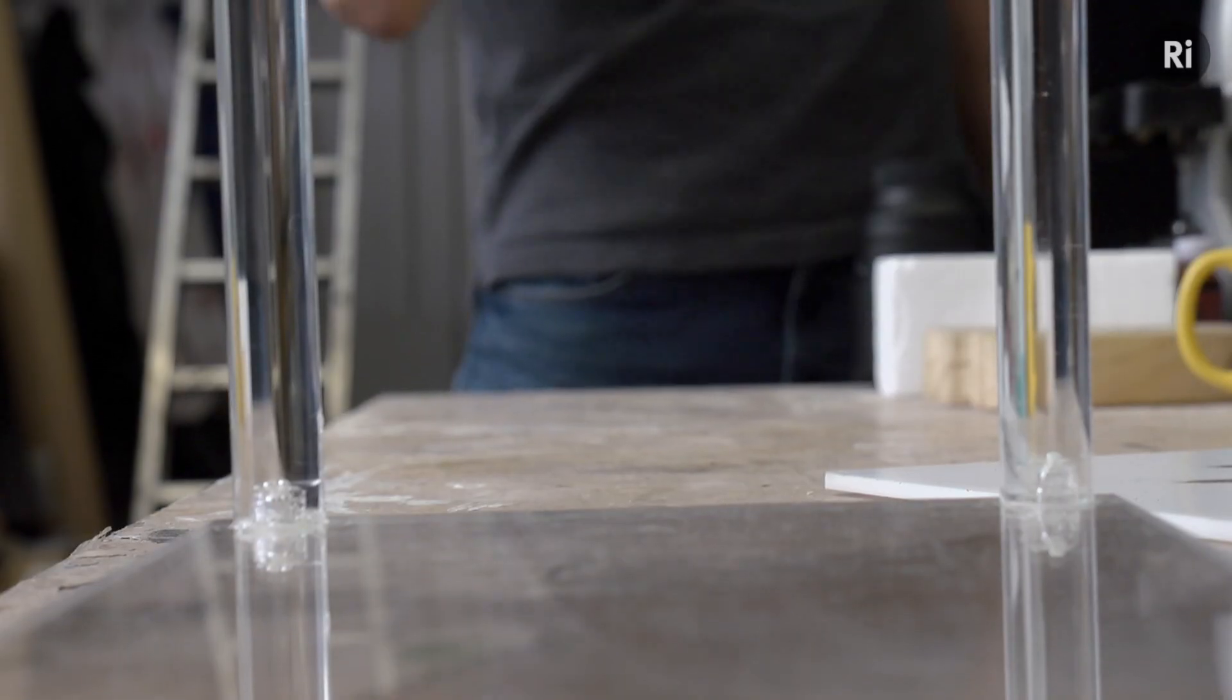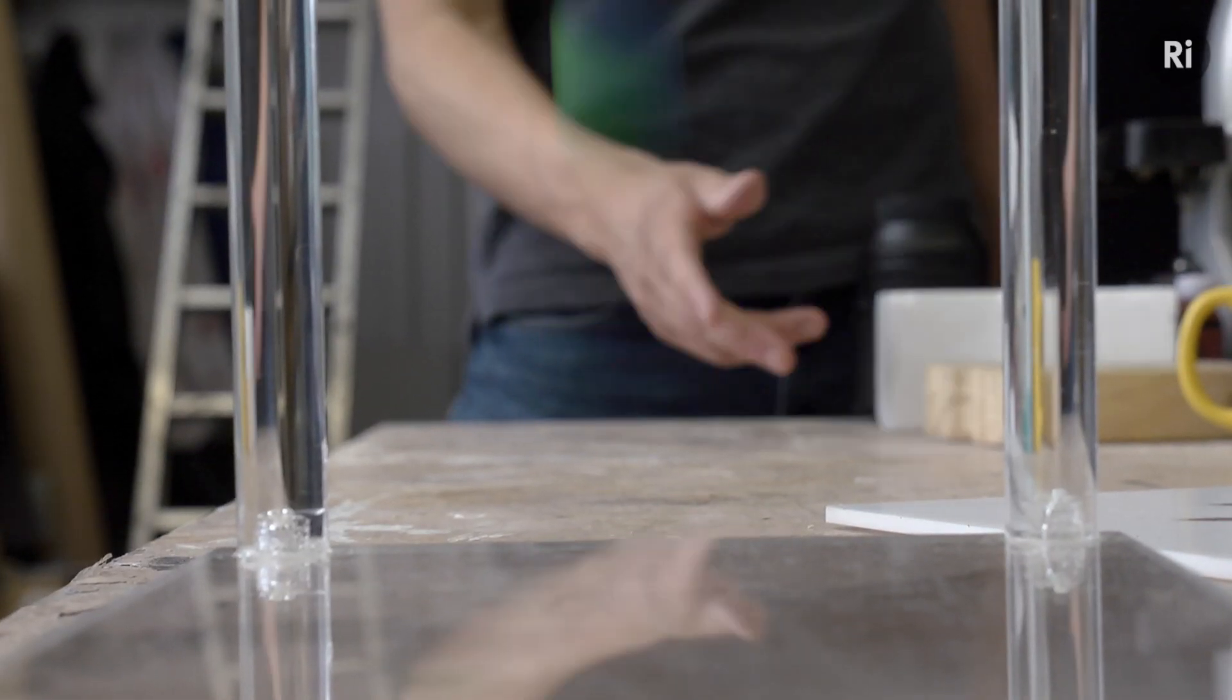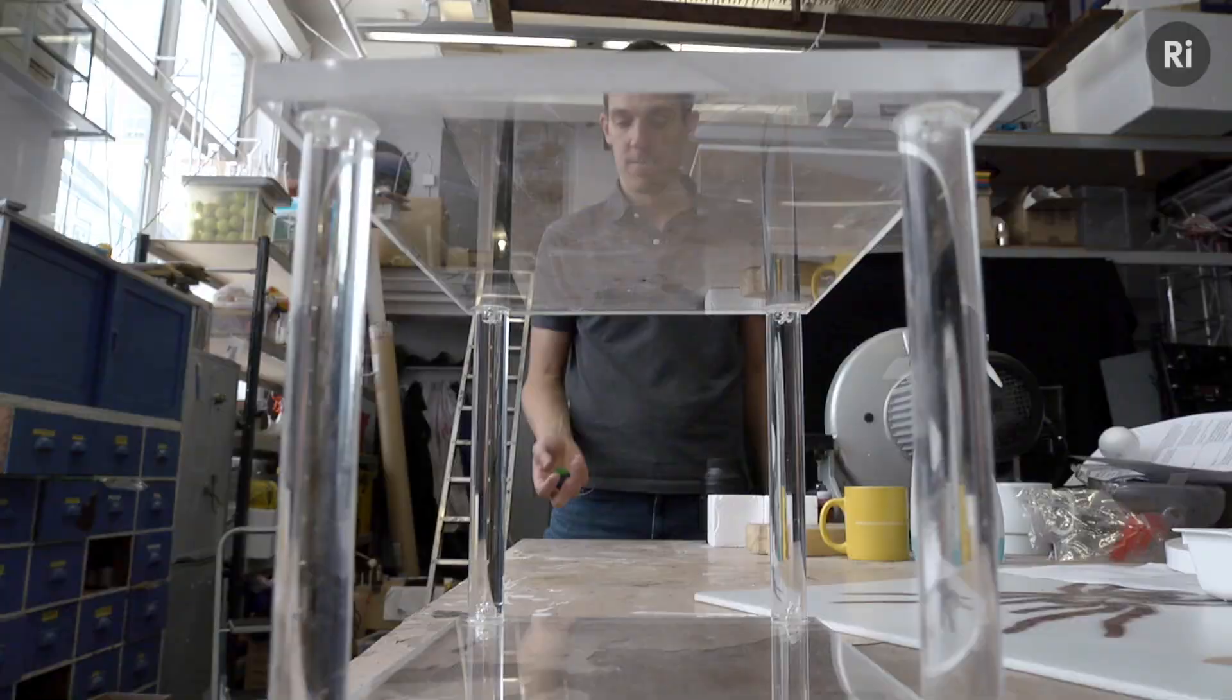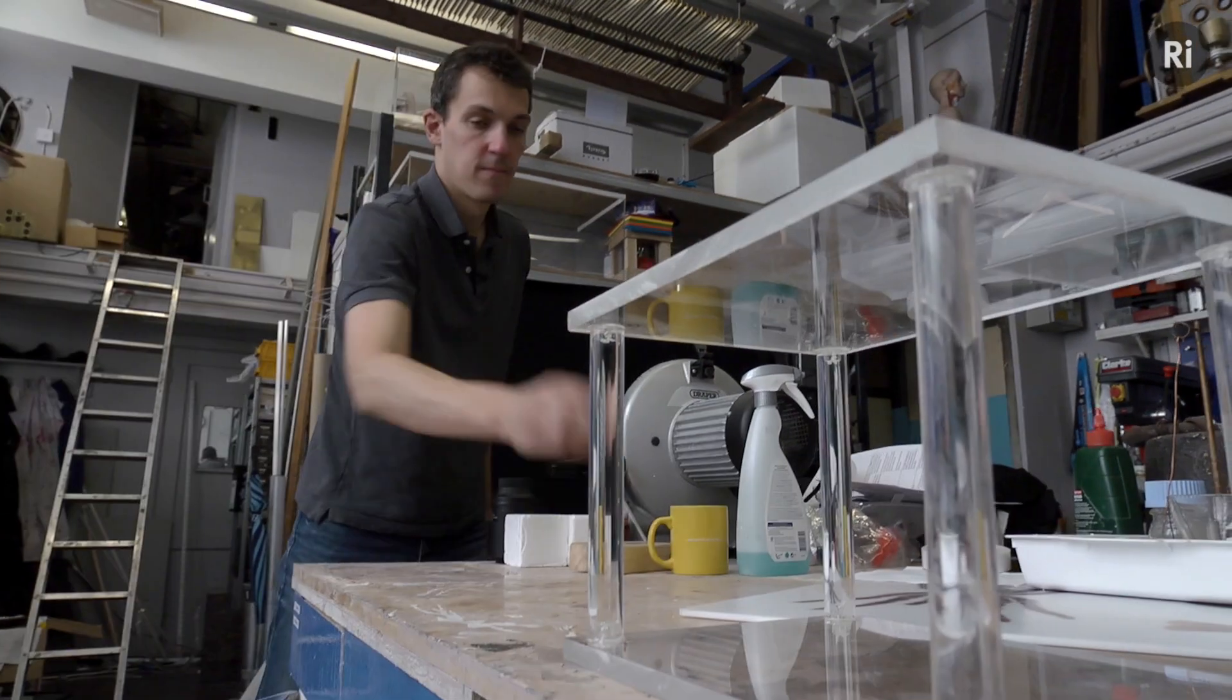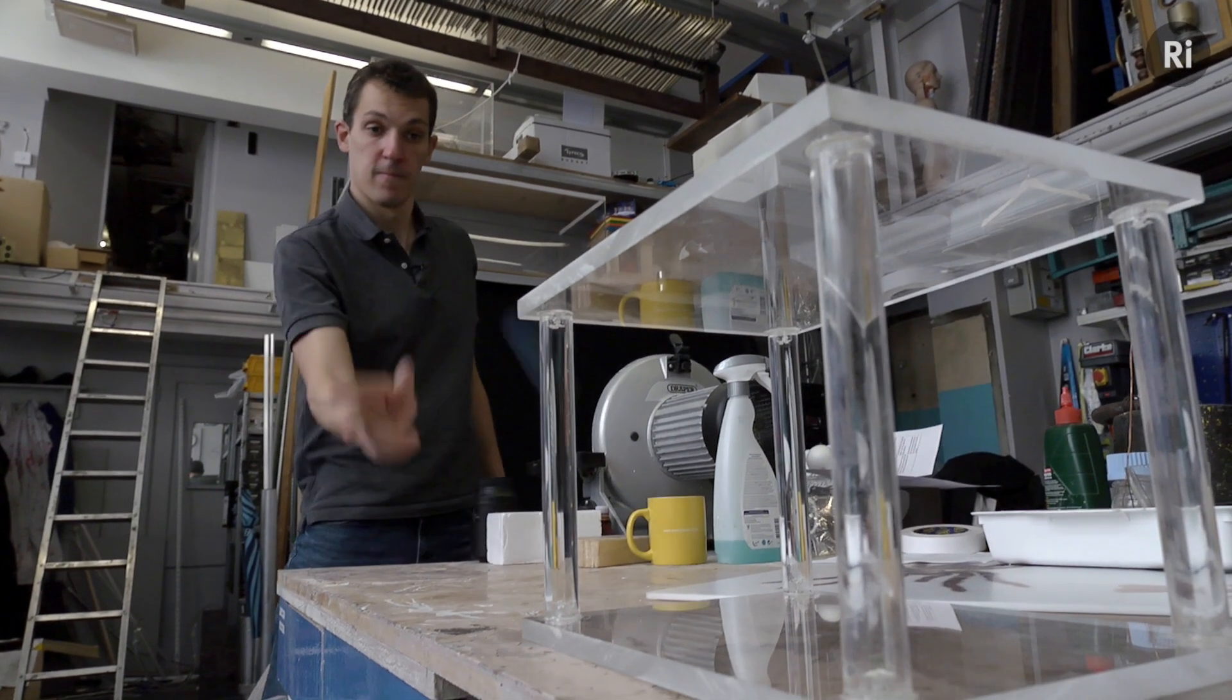So that's why I was demonstrating before with the perspex box and the bouncy ball. Except there the first bounce, where it was bouncing on the lower surface, was a bit like the glancing blow on the crossbar. And then the second bounce was like the football bouncing on the ground.